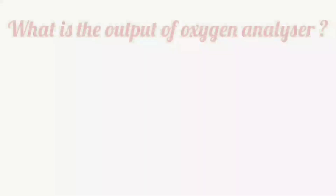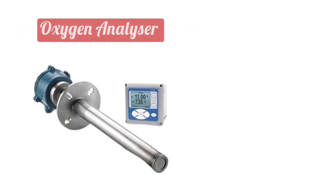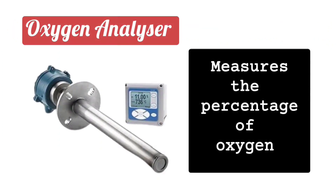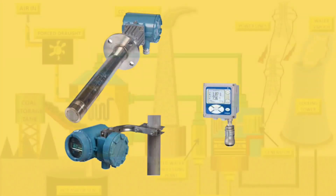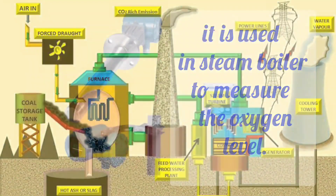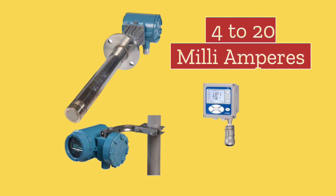What is the output of an oxygen analyzer? An oxygen analyzer measures the percentage of oxygen. It is usually used in the boiler in thermal power plants to measure the oxygen level. Its output is usually 4 to 20 milliamps.